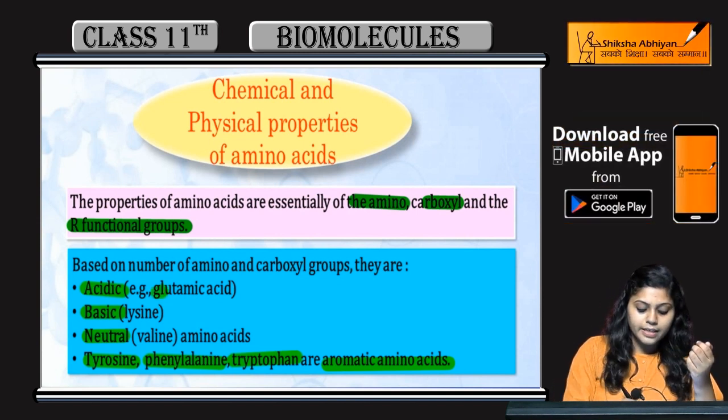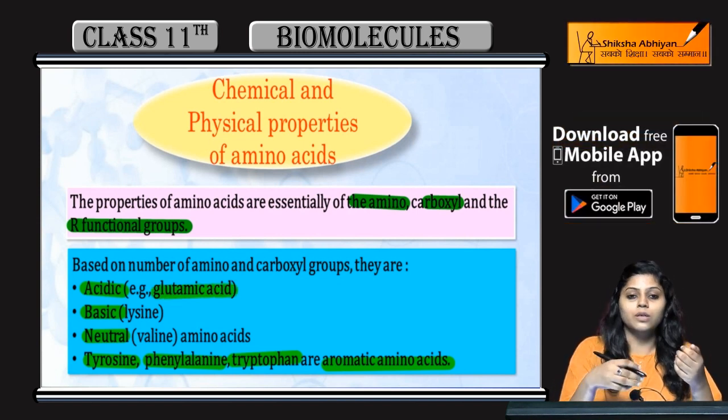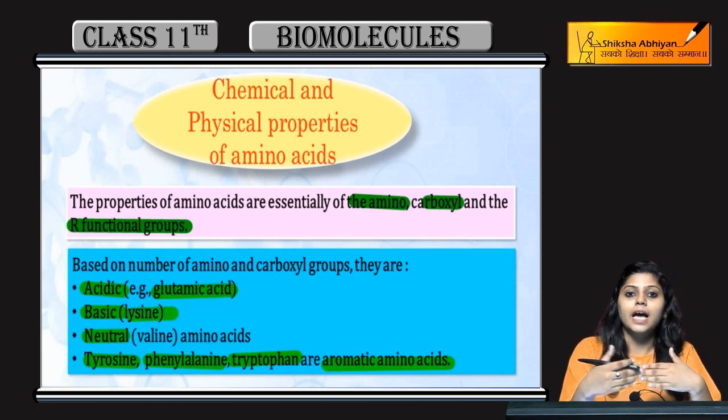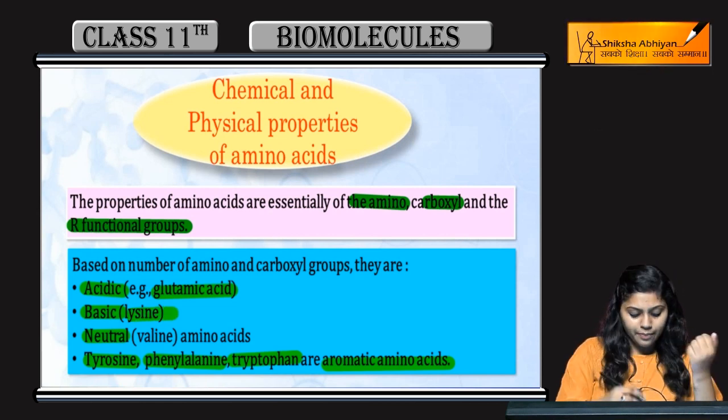An acidic example is glutamic acid. A basic amino acid is lysine. A neutral amino acid is valine.